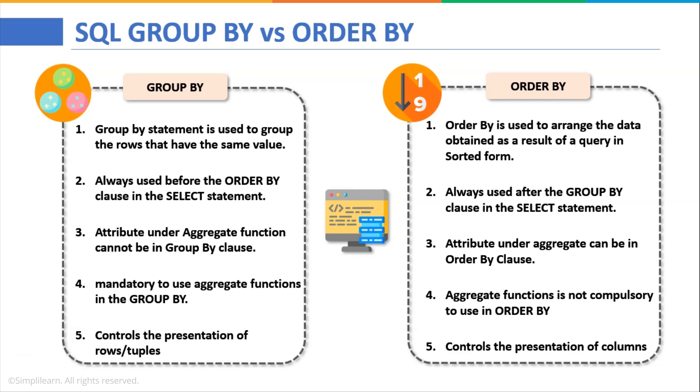That means the GROUP BY is only concerned with the values of identical rows in the resultant set whereas the ORDER BY statement basically arranges the data in the columns in either ascending or descending form.